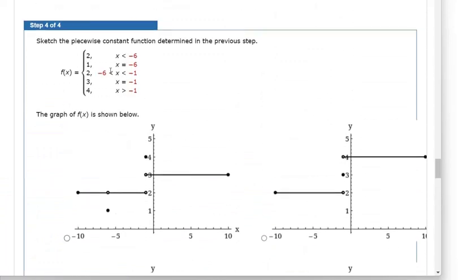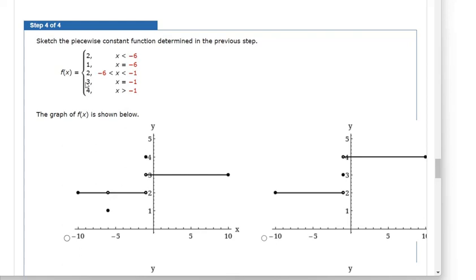They want us to choose the correct graph. y equals 2 when x is less than negative 6 — this one works. When x equals negative 6, the y value should be 1 — still working. Between negative 6 and negative 1, y should be 2 — correct. When x equals exactly negative 1, y should be 3, but on this graph the y value is 4. So this graph is eliminated.